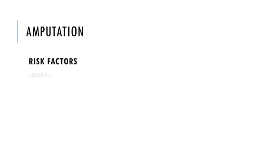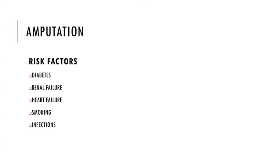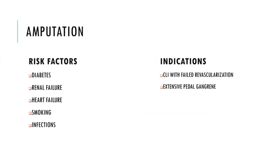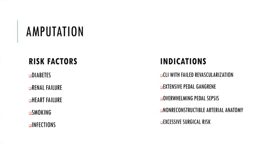Patients at increased risk of amputation are those with diabetes, renal failure, heart failure, those who smoke, and those with infections such as cellulitis or osteomyelitis. Indications for amputation include critical limb ischemia with failed revascularization, extensive foot gangrene, overwhelming foot sepsis, non-reconstructible arterial anatomy, and patients with excessive surgical risk. After six weeks, patients can be fit for a prosthesis if all wounds have completely healed.